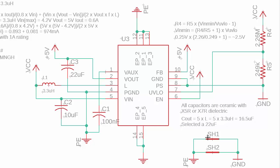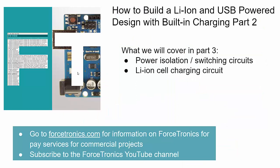Now, of course, where we put these components on the PCB also matters, but we'll cover that in part four. Okay, that's it for part two. In part three, we're going to go over the power isolation/switching circuits for our power sources, as well as the lithium ion cell charging circuits. If you have any questions, please use the comment section. If there's anything I missed, please use the comment section as well. Thank you for watching, and I'll see you back here for part three.